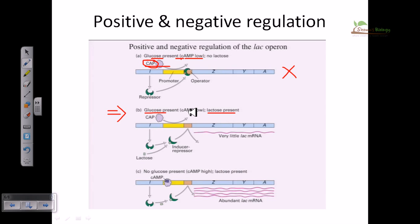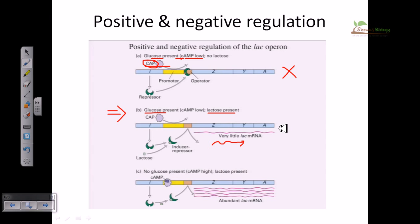When both glucose and lactose are present, because cyclic AMP is low the CAP-cAMP complex does not form properly and does not bind the promoter. However, since lactose is present it binds the repressor, changing its conformation so the repressor cannot bind the operator. This results in only a very small amount of structural gene mRNA being transcribed. Most cellular activity focuses on glucose metabolism since glucose is the simplest and preferred sugar.